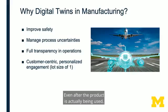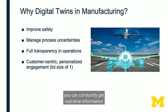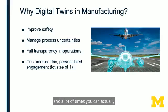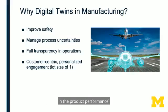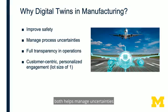Even once the physical product is manufactured and delivered to customers and being used, you can constantly get real-time information. You can predict process uncertainties and deviations in product performance, so you can have an early warning system that helps manage uncertainties and also helps improve safety.